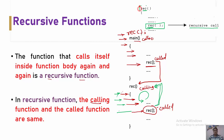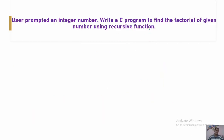To understand it better, let us consider one simple program statement: the user is prompted to enter an integer number, and we need to write a C program to find the factorial of the given number using a recursive function.